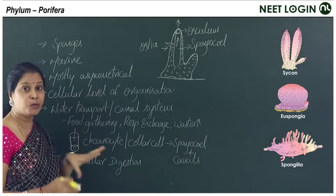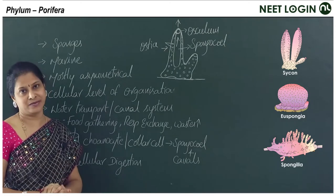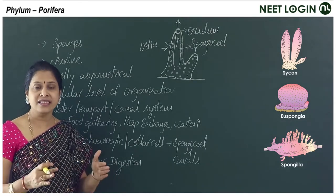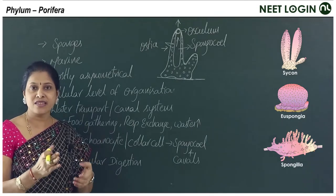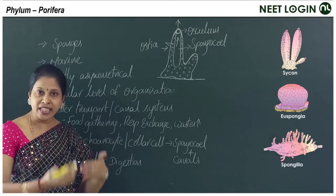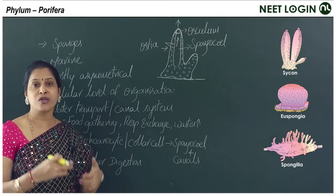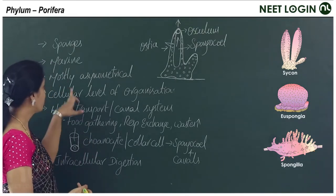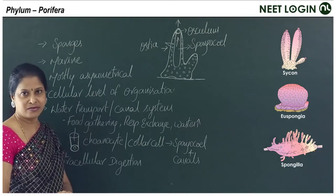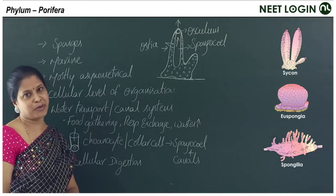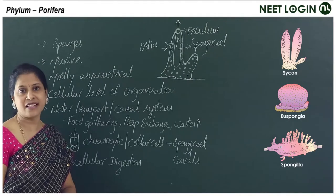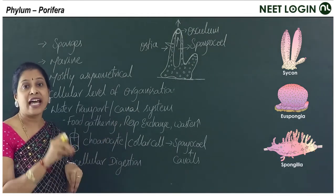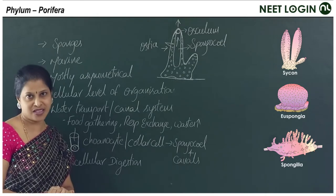The body is mostly asymmetrical. As discussed in the previous session, an asymmetrical body is one where no plane gives identical images. They're mostly asymmetrical, though radial symmetry exists in some — though not emphasized in the NCERT book.